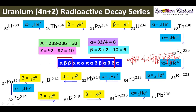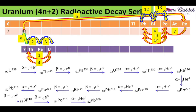Note that the neptunium series starts with beta, while the other three series all start with alpha. This is the easiest way to memorize it. The first step is uranium to thorium, then thorium to protactinium, protactinium to uranium again, and uranium to thorium.